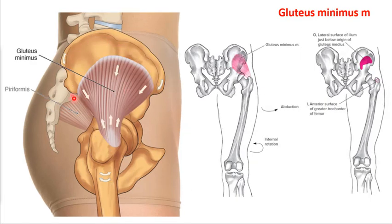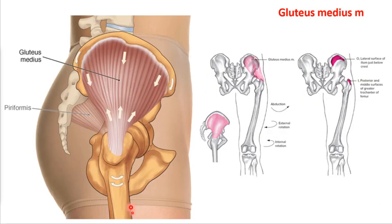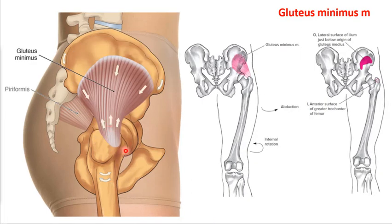The glute minimus has a bias toward the anterior aspect, making it more of a hip flexor and internal rotator, though it can do a little external rotation and extension. Unlike the glute medius which attaches in the middle of the greater trochanter giving it a balanced pull, the glute minimus attaches more anteriorly, making it a more powerful hip flexor than extensor. It can do abduction, internal rotation, external rotation, flexion, and extension.